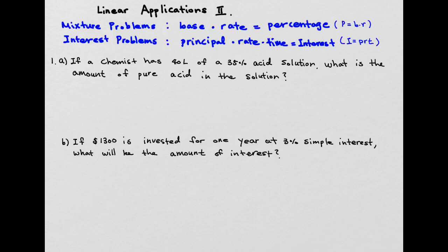For mixture problems, in order to find the pure amount, you're going to multiply base times the rate. For interest problems, if you want to find interest, you're going to multiply principal times rate times time. I equals PRT is well known.